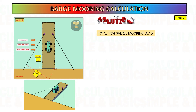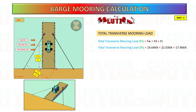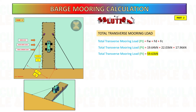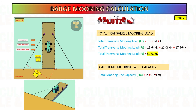Now add all the forces to get the total transverse mooring load: wind load, tidal current load, and wave drift load. Next, calculate the mooring wire capacity — total mooring load multiplied by half of the barge width, divided by the parallel distance from the mooring line to the front edge of the barge.